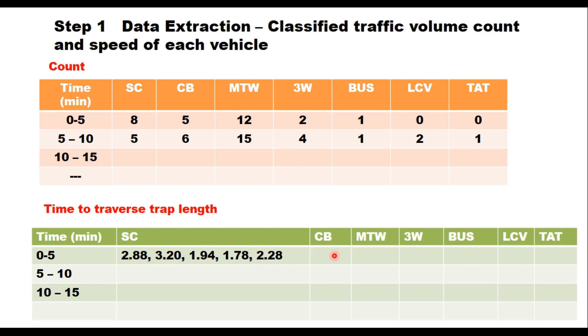That will be the average time taken by small car or standard car to traverse the track length. Similarly you do for big car, for motorized 2 wheeler, 3 wheeler, bus, LCV and TAT for each time interval of 5 minutes.